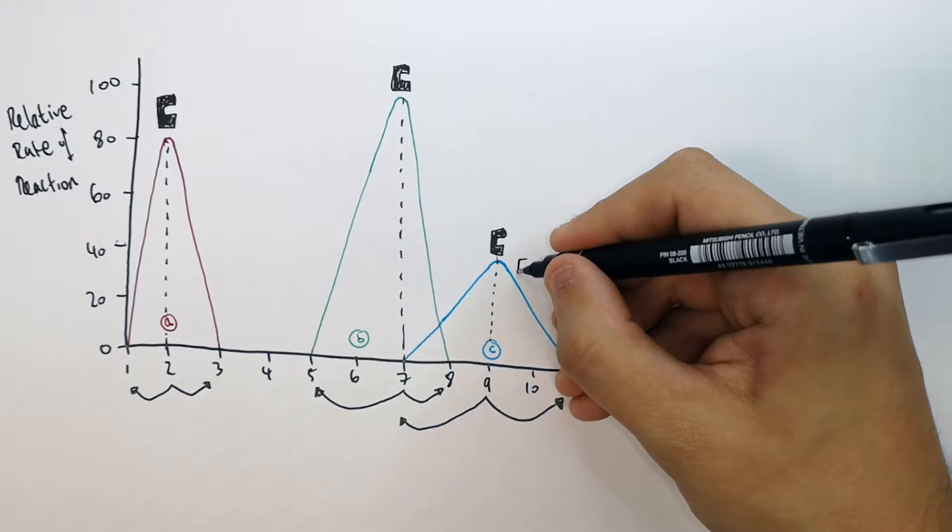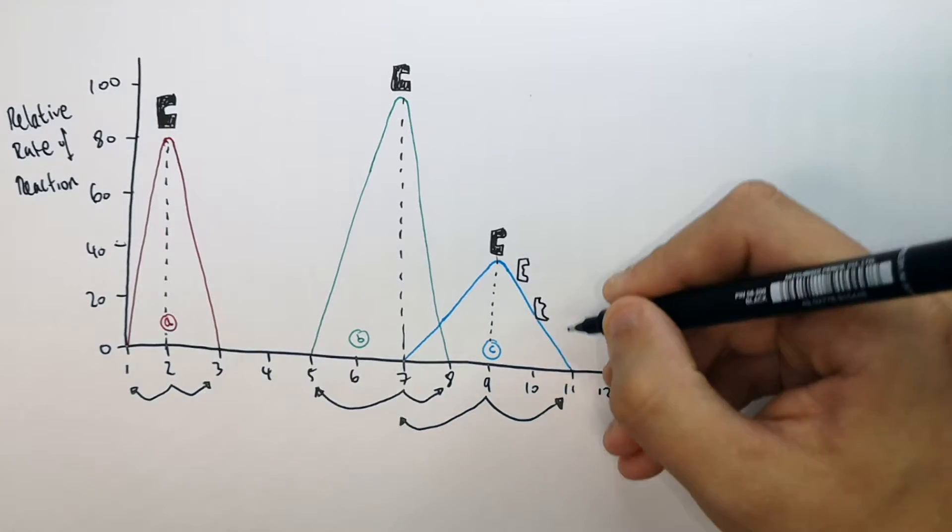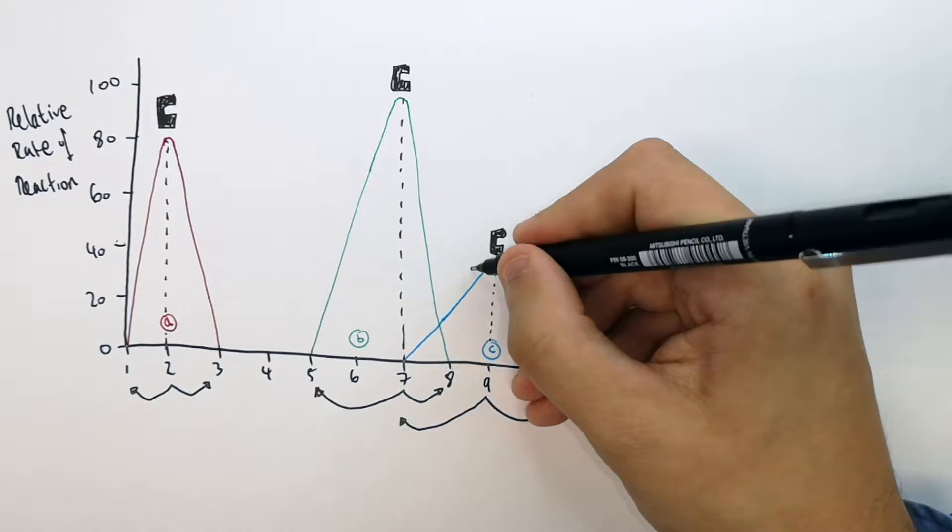This is because the enzyme denatures. It changes shape above or below the optimum pH.